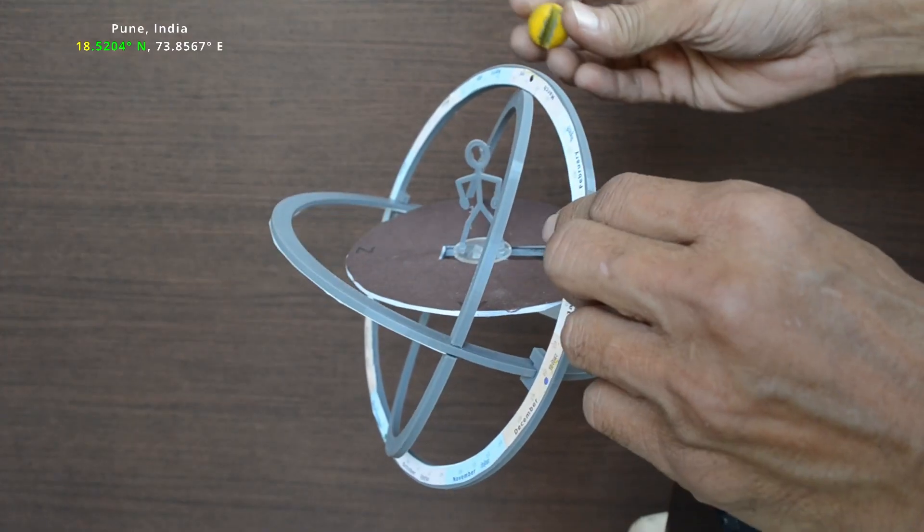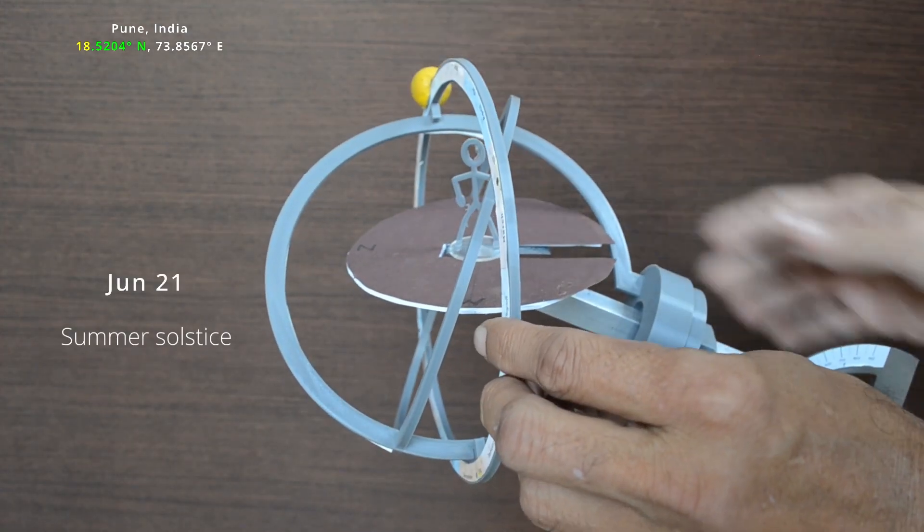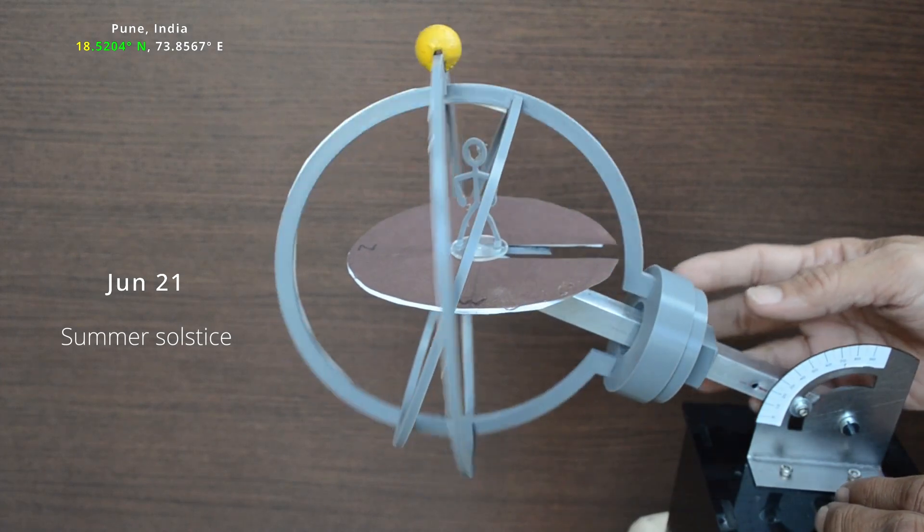Summer solstice is on 21st June. Sun rises north of east and sets north of west.